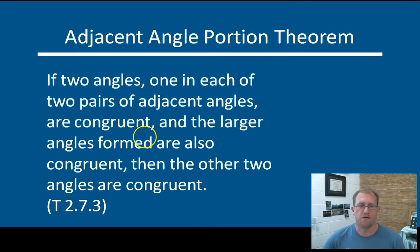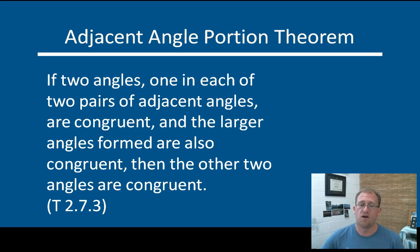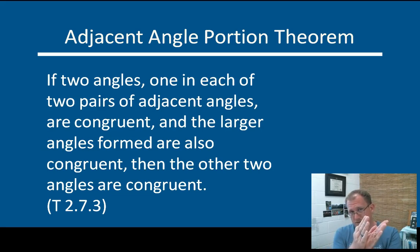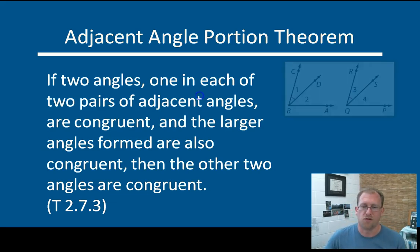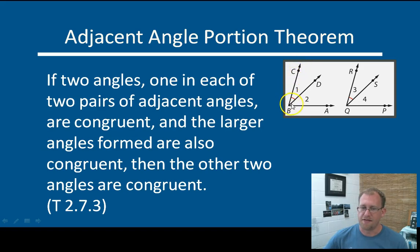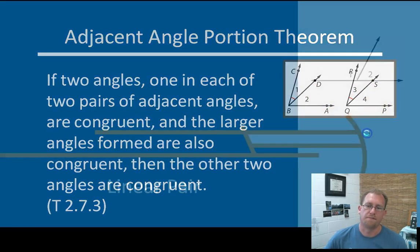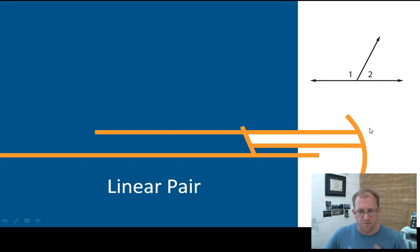The adjacent angle portion theorem: of two angles, one in each of two pairs of adjacent angles are congruent, and the larger angles formed are also congruent, then the two remaining angles are congruent. In other words, it's the same thing as the last theorem, but instead of saying that the two smaller parts are congruent so the sum must be congruent, now I'm saying the sum and one of the smaller ones are congruent, so the other smaller one must also be congruent. It's just looking at the same concept, but backwards.